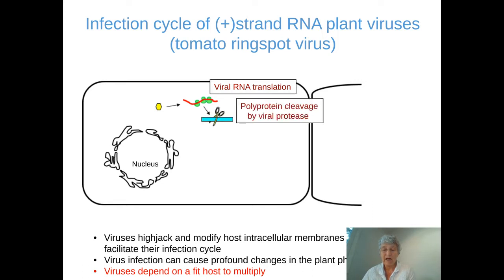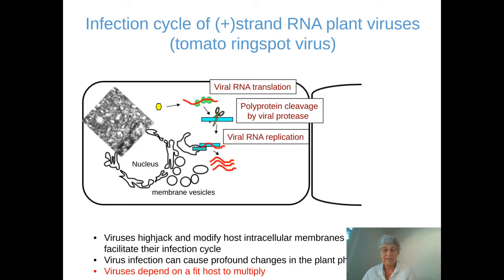After translation, you have release of the viral protein, and in the case of many plant viruses — about half of plant viruses, including tomato ring spot virus — a polyprotein is released that is then cleaved by a viral protease. Once the mature viral proteins are there, you have formation of viral RNA replication complexes, and basically the RNA and the replication proteins will assemble in complexes in association with intracellular membranes from the host. This causes massive membrane proliferation, which you can see on the EM picture shown in the corner of the slide.